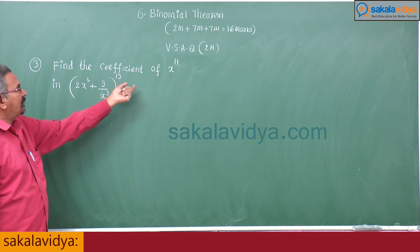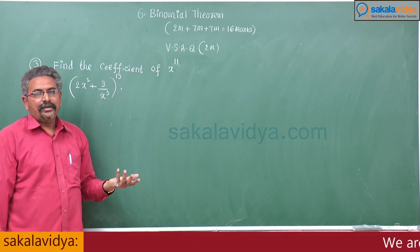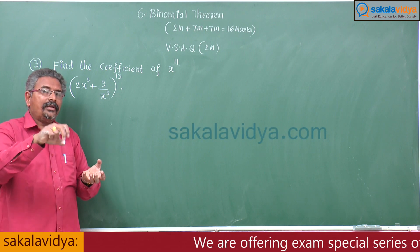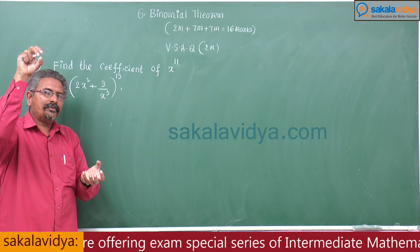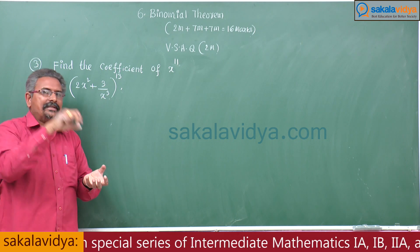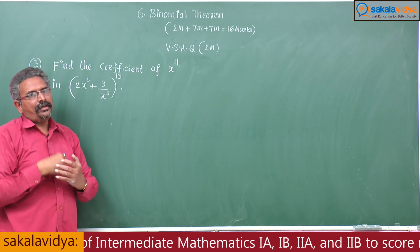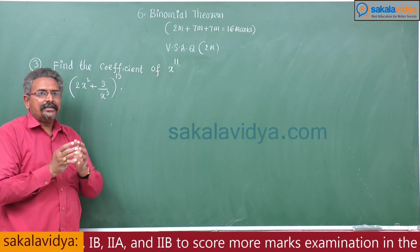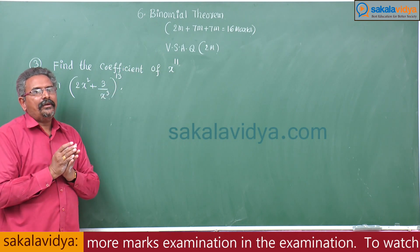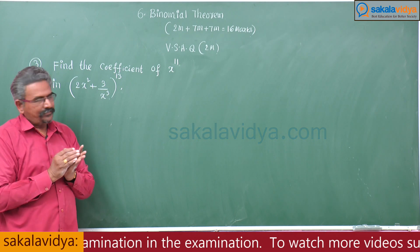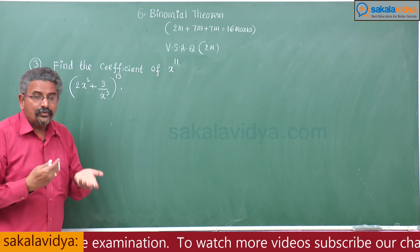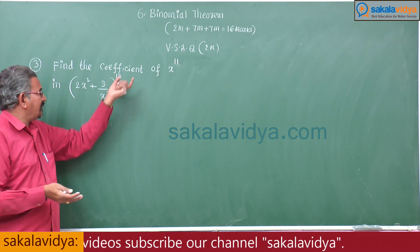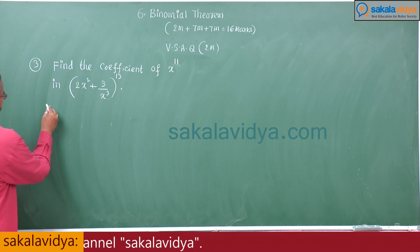Now, in order to find the coefficient of x to the power of 11, we have to find the term in which x to the power of 11 appears. That term has to be evaluated first. Since we do not know the term, we let the general term be the one consisting of x to the power of 11.